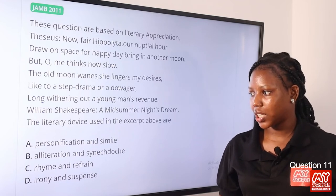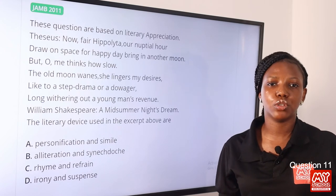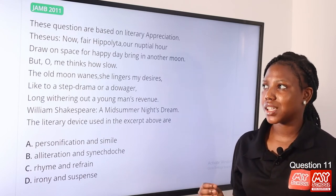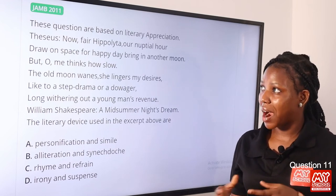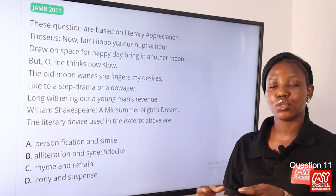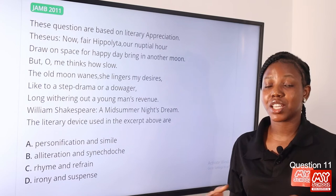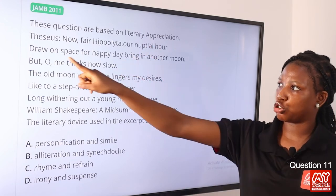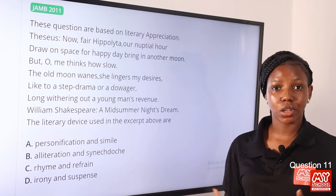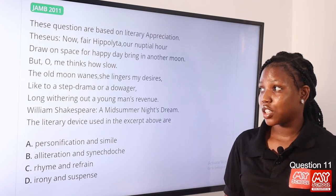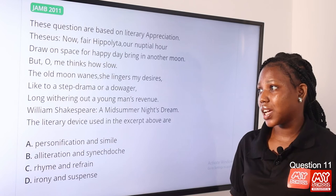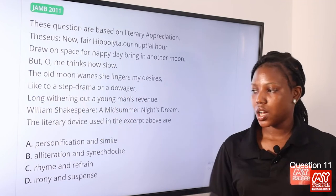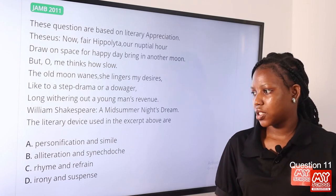Question 11. The answer is option A, personification and simile. Personification is giving the attribute of a human being to a non-human, and simile is the use of 'like' and 'as' to compare. In the excerpt — about a man preparing to marry Hippolyta — we see 'our nuptial hour draws on apace.' 'To draw on' is personification. The moon wanes — waning is another example. Then 'she lingers like a step-dame or a dowager' — this is the use of simile. So the answer remains option A, personification and simile.